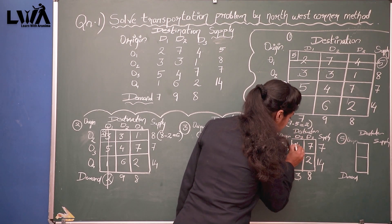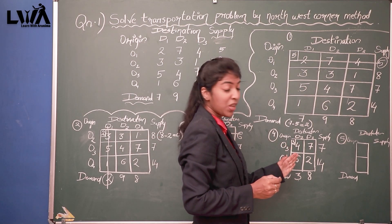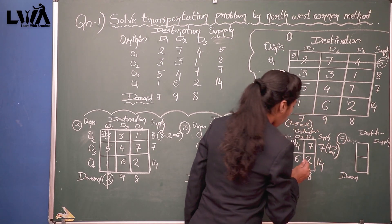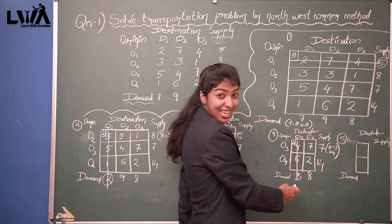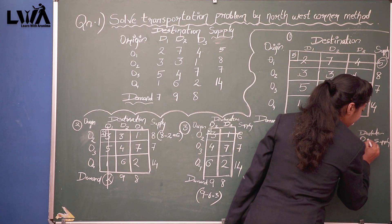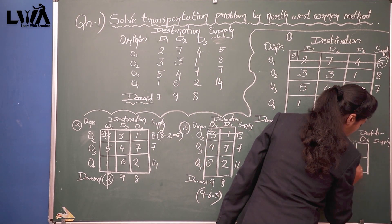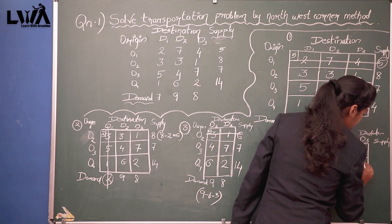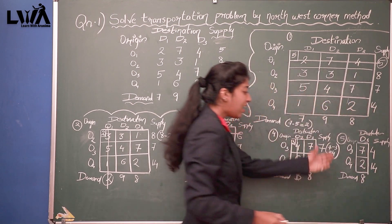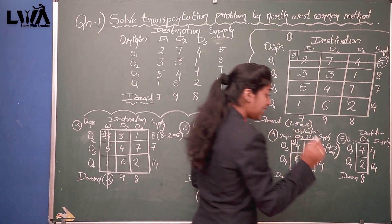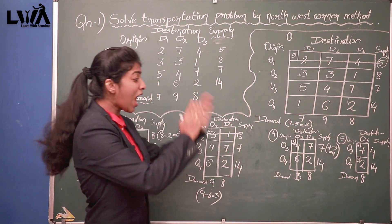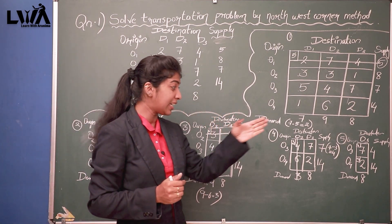The fourth stage: which is the smallest? 3. So 3 is taken to the North West area. Next, 7 minus 3 equals 4, and we exhaust this column. What is left: D3 with O3 and O4. Values are 7 and 2; supply 8 and 14. The remaining supply from O3 is 4. We write 4 and 14 in this final matrix.